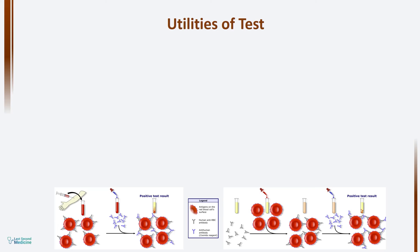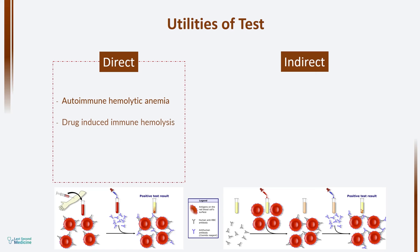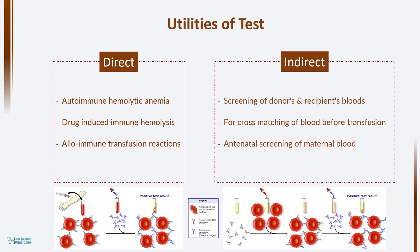Coming to the utilities of Coombs test. You now have a fair idea that the direct test is done for diagnosing the presence of immune hemolysis, while the indirect test is a screening test to look for the presence of antibodies in plasma. Direct antiglobulin test is used for the diagnosis of autoimmune hemolytic anemias, drug-induced immune hemolysis, and alloimmune transfusion reactions. While indirect antiglobulin test is used in screening of donors' and recipients' blood for cross-matching before transfusion, and for antenatal screening of maternal blood for the presence of antibodies.